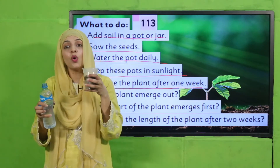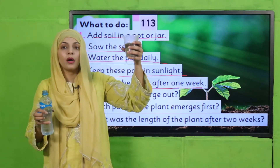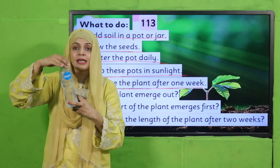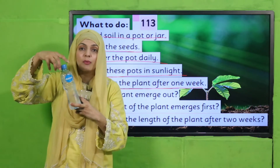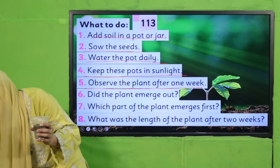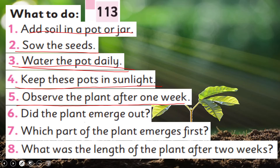After that, I will keep it by the window in my office so that sunlight reaches it properly. Water the plant daily — after two days, or if you think the soil is dry, you water it. Keep these pots in the sunlight. Observe the plant after one week.